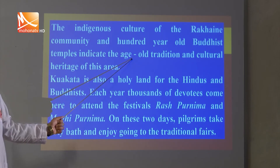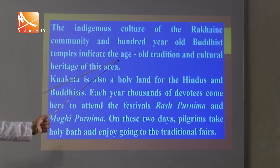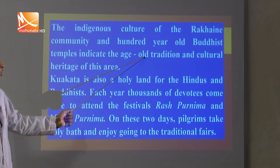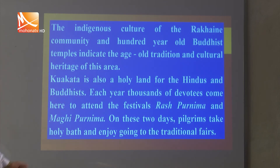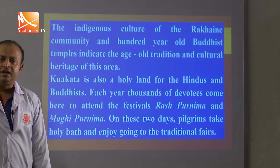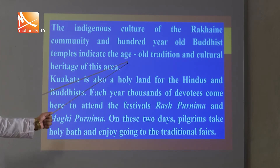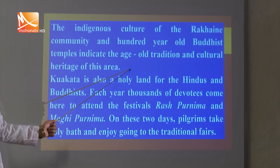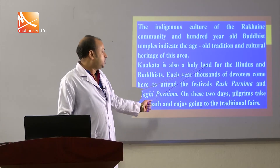The oldest Buddhist temple of the Rakhine community is located here. These temples are an indication of the old tradition and cultural heritage of this area. Both Hindu and Buddhist temples are found in Kua Kata, making it a very special place.